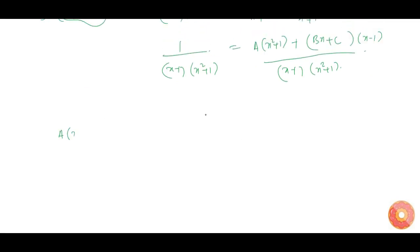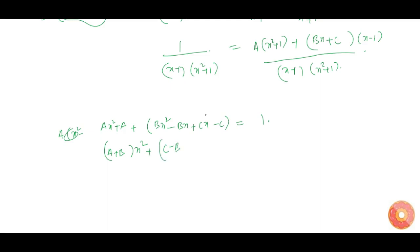We get A into x squared plus A plus Bx squared minus Bx plus Cx minus C is equal to 1, which gives us (A plus B) into x squared plus (C minus B) into x plus (A minus C) is equal to 1.